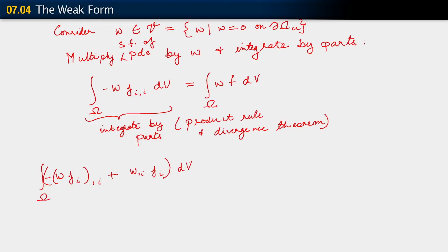If you expand out the first term in the integrand using the product rule, one of the resulting terms cancels the second term, and we're left with what we had originally. The term w j_i can be viewed as a vector — specifically component i of the vector w times j — and that term is essentially the divergence of w j. There we invoke the divergence theorem.